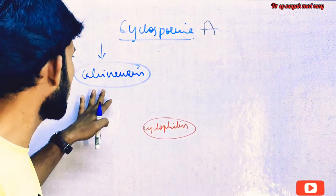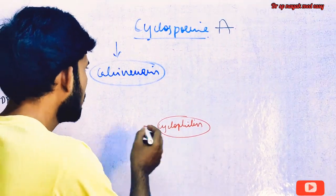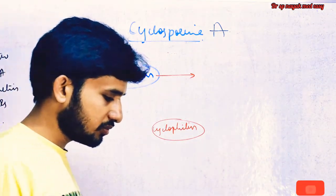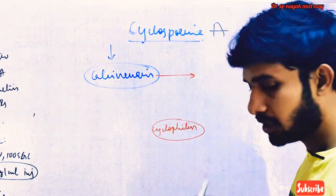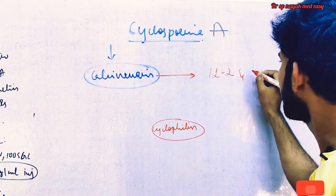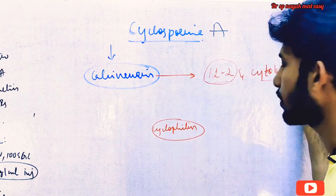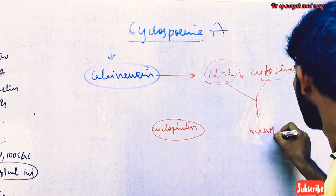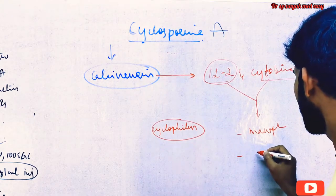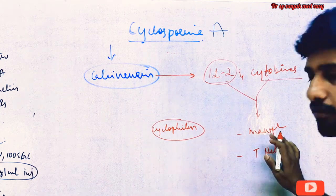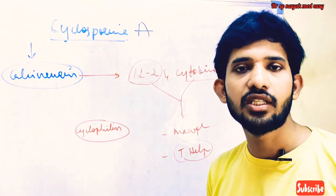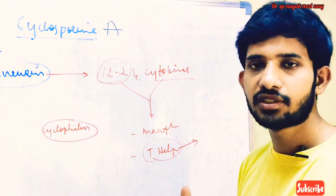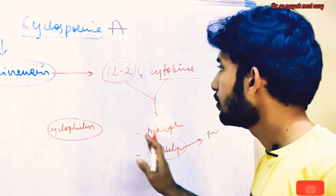Cyclosporine is a calcineurin inhibitor. Calcineurin is very important in the formation or generation of interleukin-2 (IL-2) and cytokines. These interleukin-2 and cytokines are very important in the proliferation of macrophages and also in the formation of T helper cells. T helper cells are very important in cell-mediated immunity as well as in humoral immunity — producing antibodies and activating macrophages.